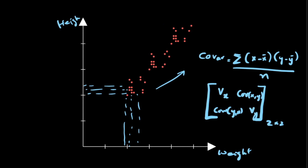What is the covariance of y with respect to x, and then what is the variance in the y direction? Note that variance in x and variance in y can also be written as covariance of x with respect to x, and covariance of y with respect to y.